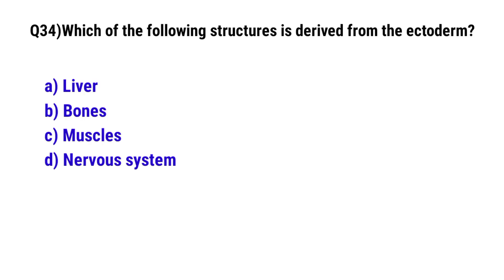Question No. 34: Which of the following structures is derived from the ectoderm? The correct option is D: Nervous system.